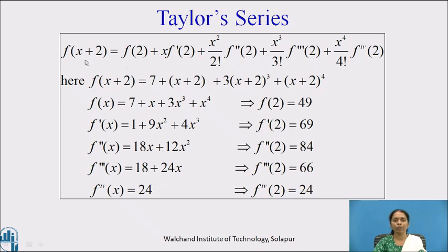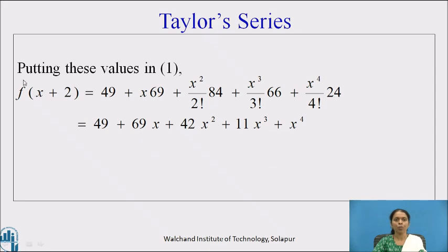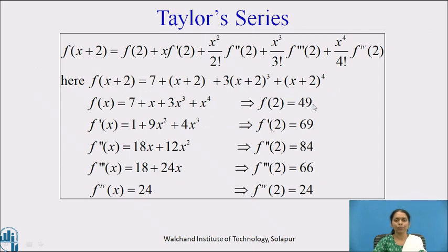Now, looking carefully at the representation, we need the values f(2), f'(2), f''(2), f'''(2), and f⁽⁴⁾(2), obtained by putting x = 2 into all these expressions. Successively we get: f(2) = 49, f'(2) = 69, f''(2) = 84, f'''(2) = 66, and f⁽⁴⁾(2) = 24.